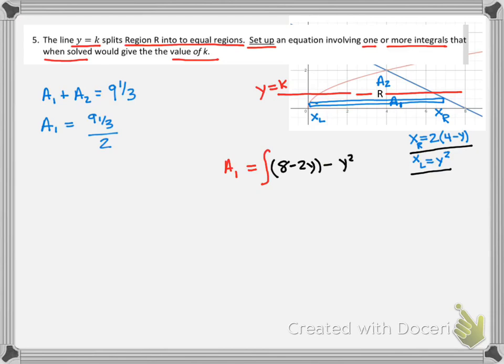So this is really finding the area, but we don't know the upper limit. We know we start at zero, but we don't know what that upper limit is, except that we do know this is the line Y equals K. So if we stop our integration at K, then that would give us area one.